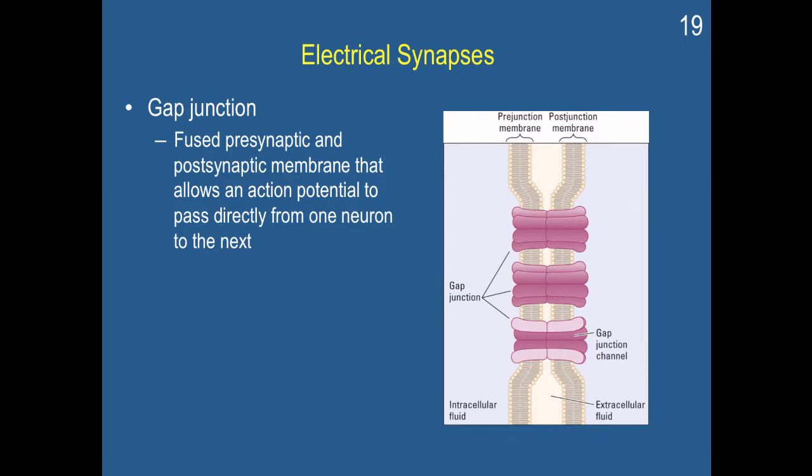A downside of course with the gap junctions is that they're not as flexible. They are physically connected. So because they're physically connected, it's much harder to change the relationship between the neurons, which is a principal part of learning and adapting to your environment.